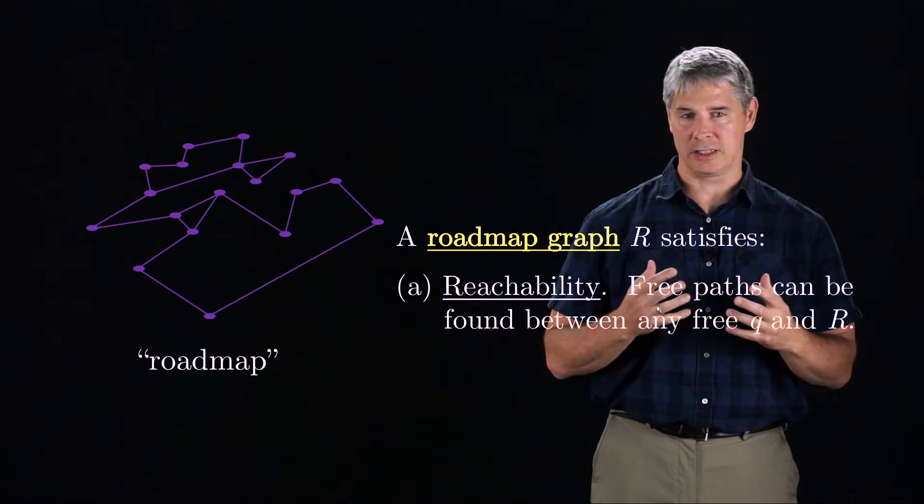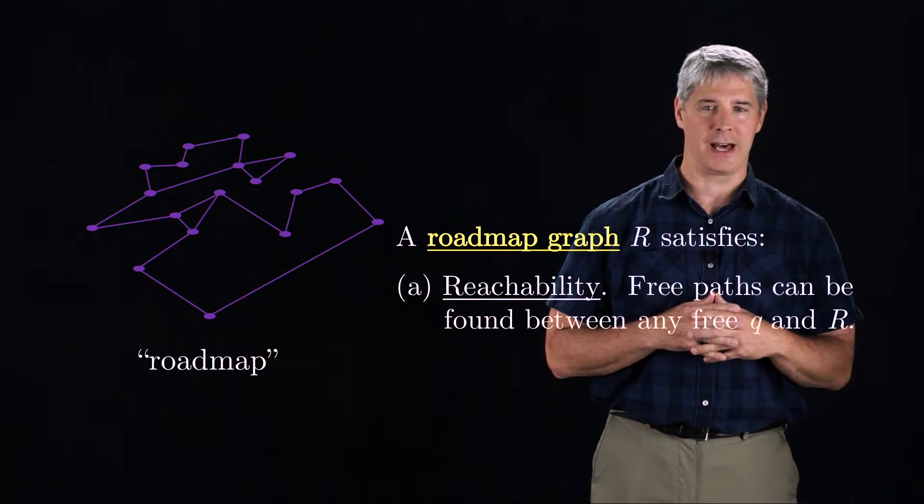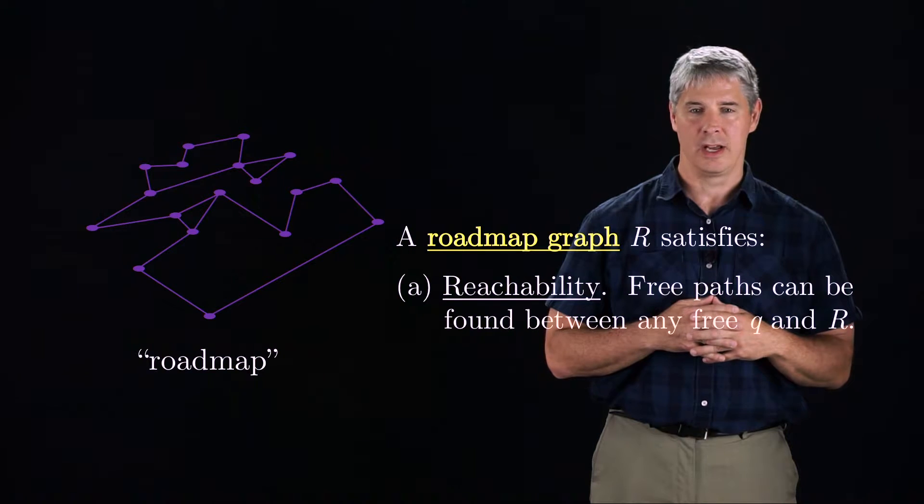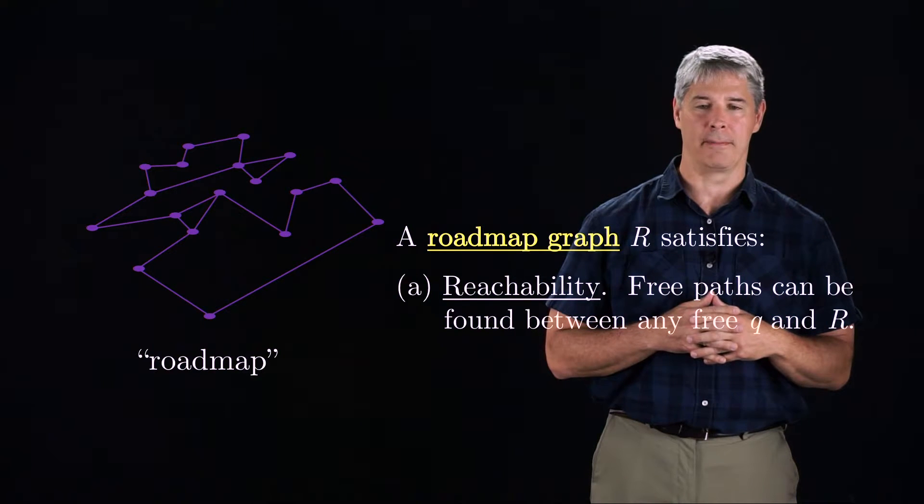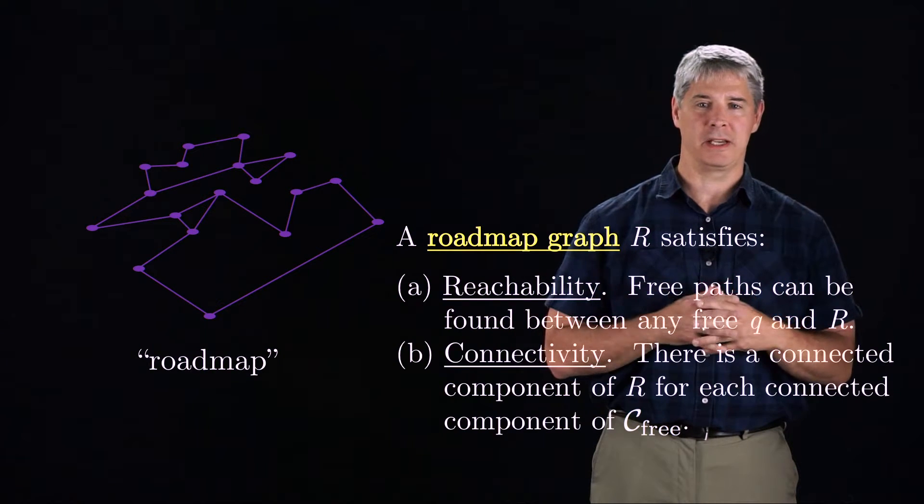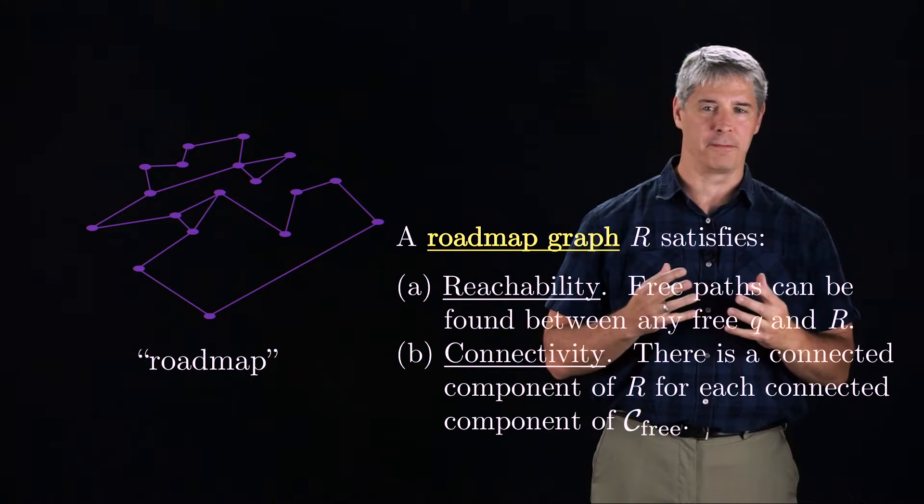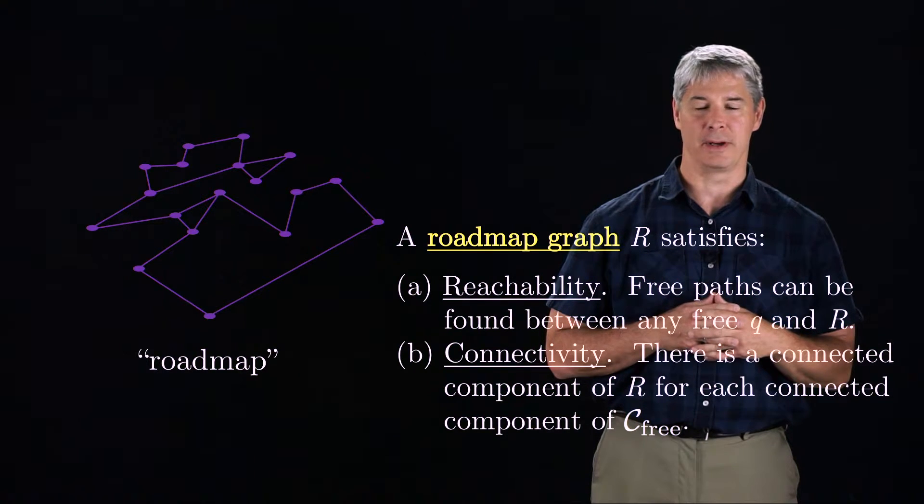First, it must be easy, or at least possible, to find free space paths between any configuration Q and some configuration on the roadmap. Second, there must be a connected component of the roadmap for every connected component of the free C-space.